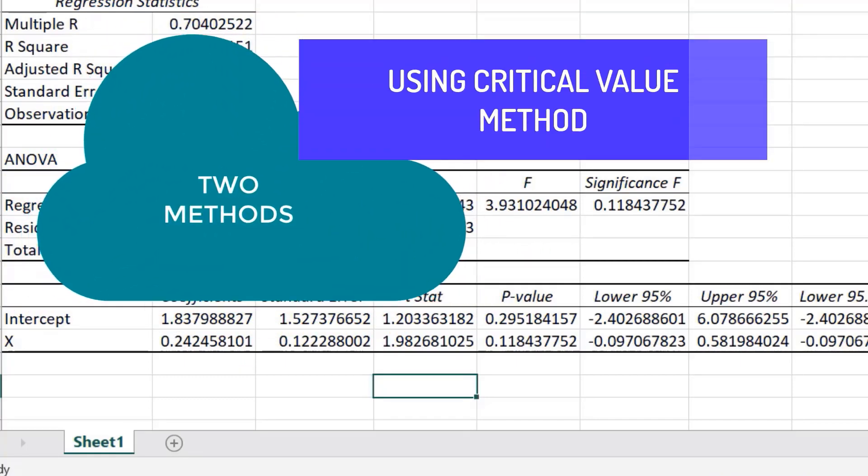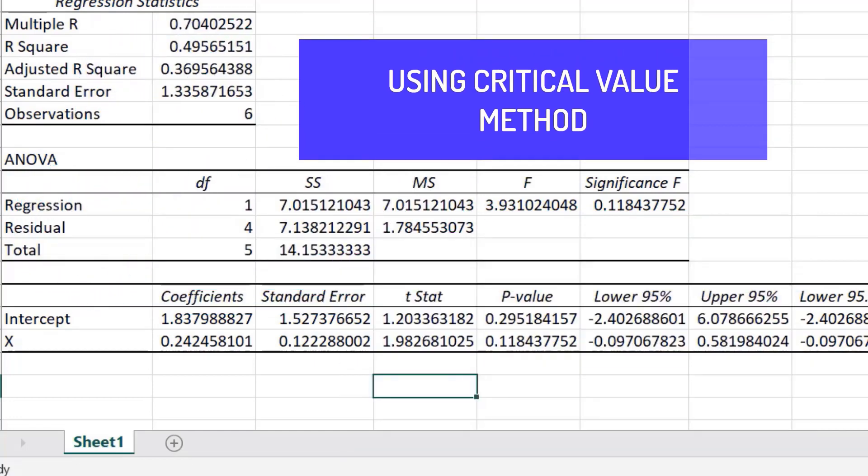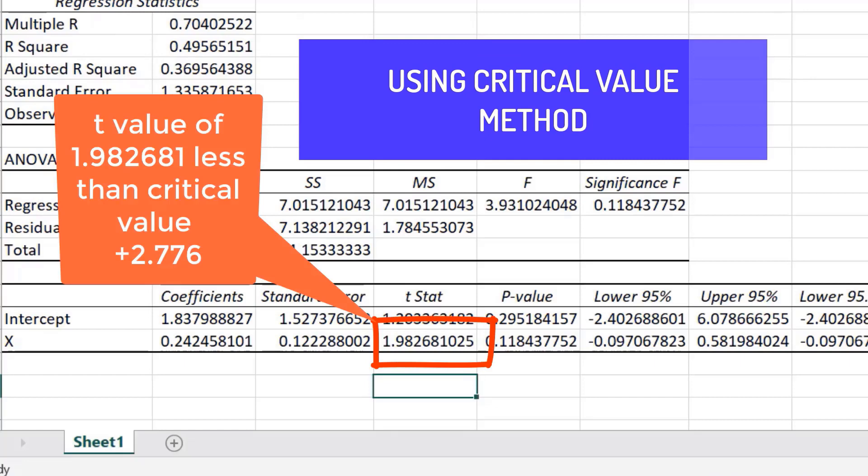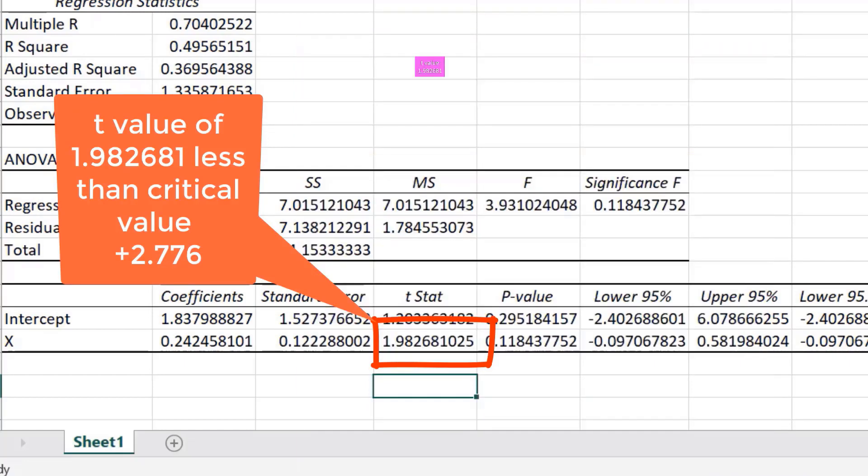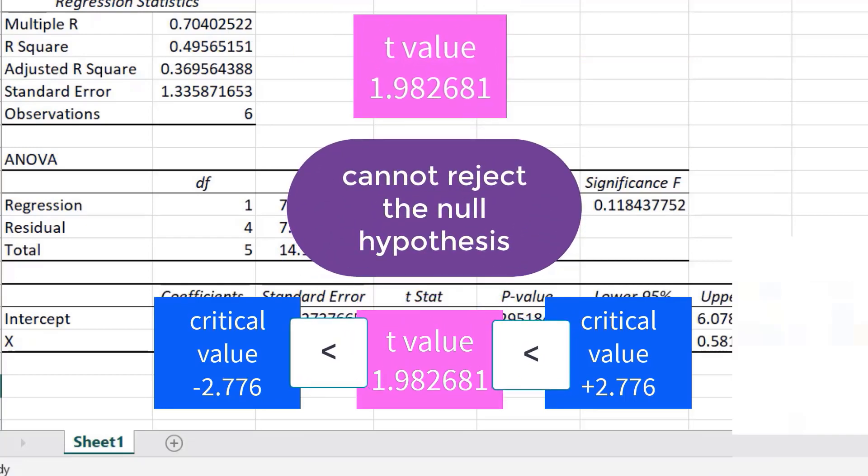The first method, which we already applied, is the use of critical values. Since the t-value of 1.98268 is less than the critical value of positive 2.776, we cannot reject the null hypothesis.